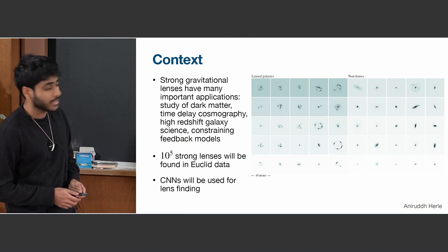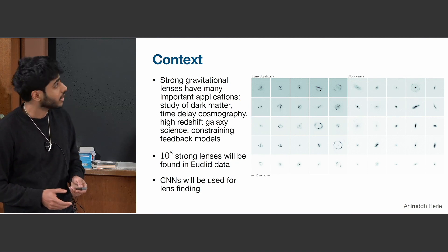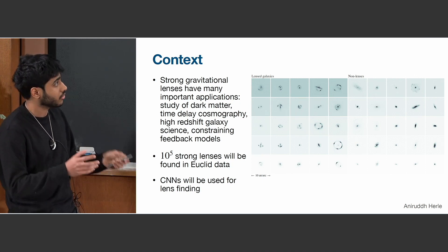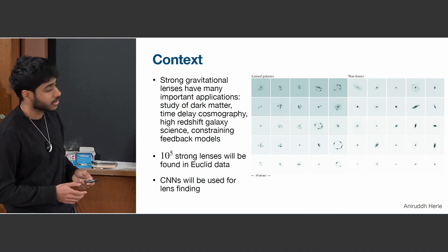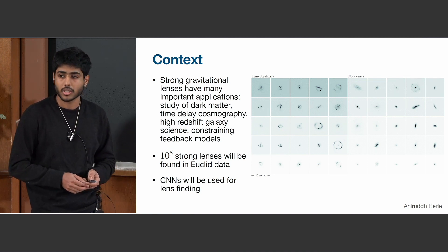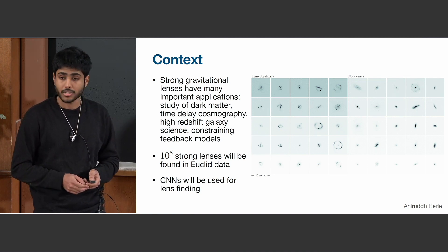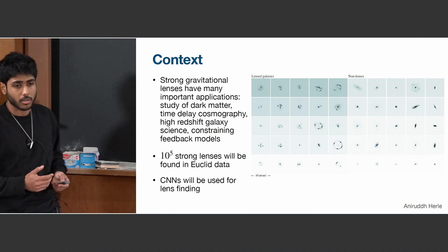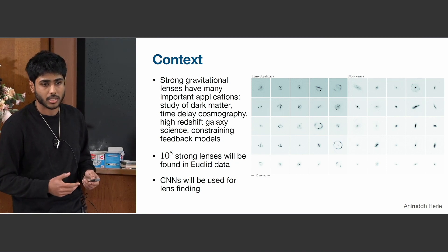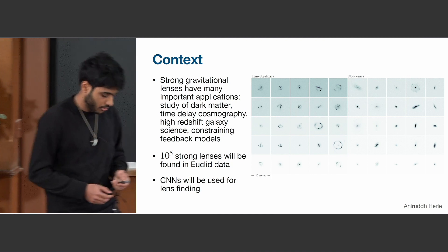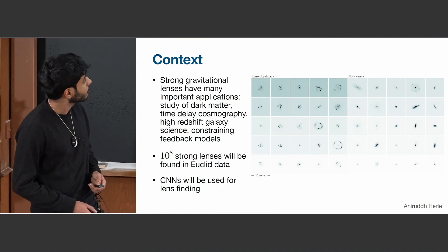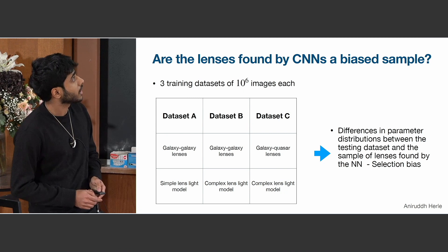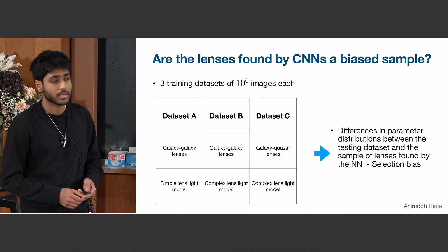Basically, CNNs are going to be used for lens finding. You have lenses and non-lenses and the network just has to classify these objects. We heard a lot of cool applications of machine learning in astronomy this week, but my talk is going to be more about the biases that using CNNs can introduce. The question we asked ourselves was: are the lenses found by CNNs a biased sample?